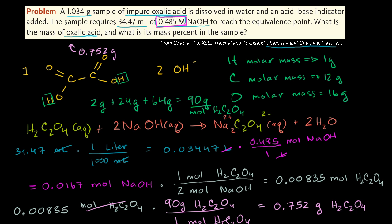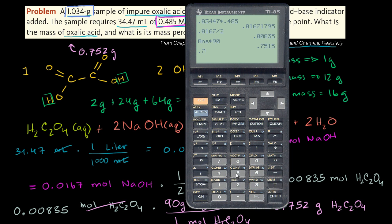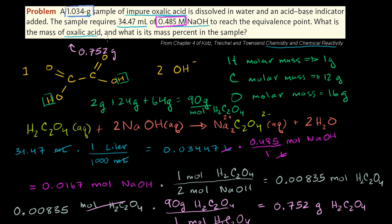For the second part — the mass percent in the sample — the original impure oxalic acid sample was 1.034 grams. We divide 0.752 by 1.034 and get 72.7%. So the impure oxalic acid sample is 72.7% actual oxalic acid.